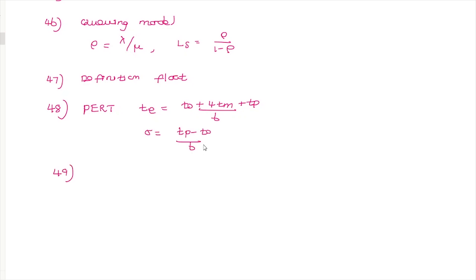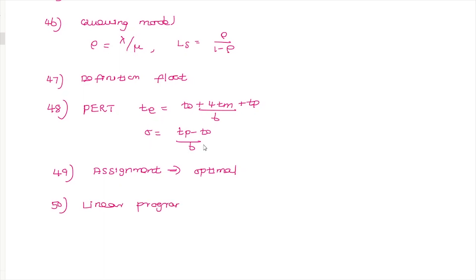The assignment problem is a special type of transportation problem. The assignment problem has an optimal solution, as does the transportation problem. For linear programming, when multiple optimal solutions exist, the objective function is parallel to a constraint, yielding multiple solutions.